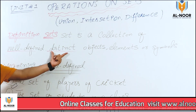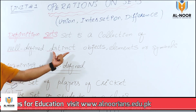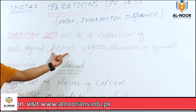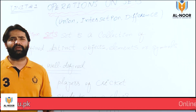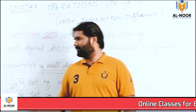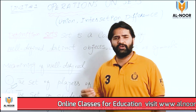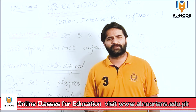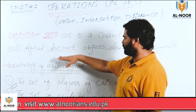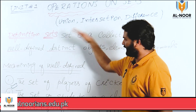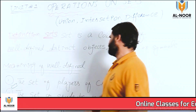اب ہمارے پاس word ہے 'distinct'۔ یہ انگلش word ہے، اس کا مطلب ہے الگ ہونا، جدا ہونا، ایک دوسرے سے مختلف ہونا۔ جیسے کوئی انگلش word 'distinction' لیتا ہے، لیکن set کے اندر distinct سے مراد ہے کہ ہر element چنیدہ اور منفرد ہو۔